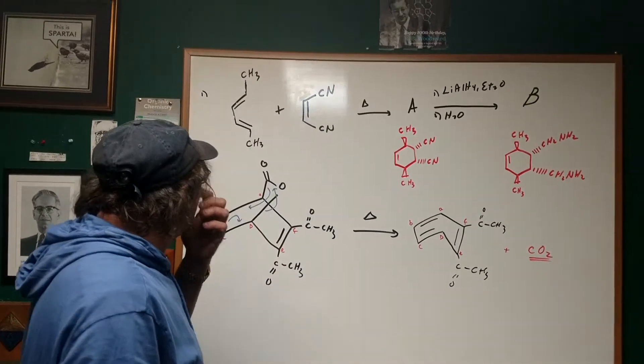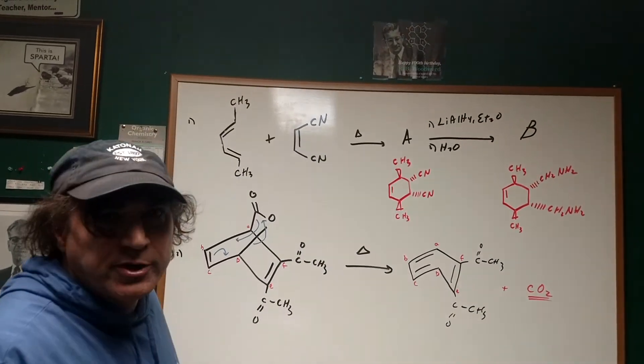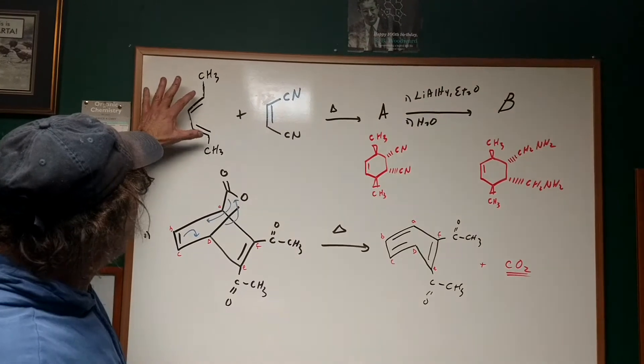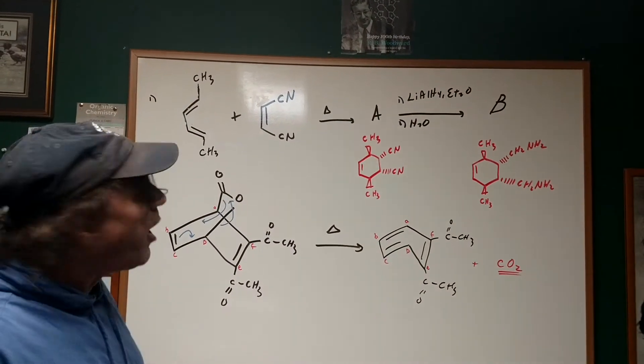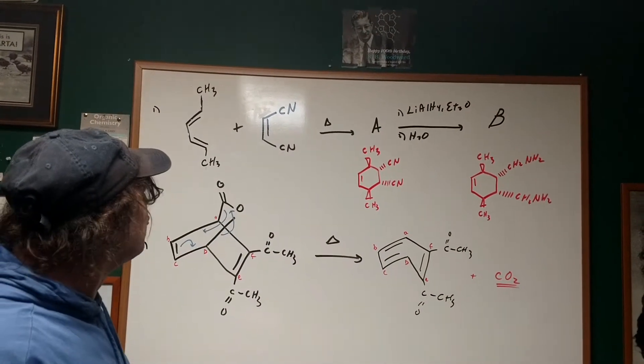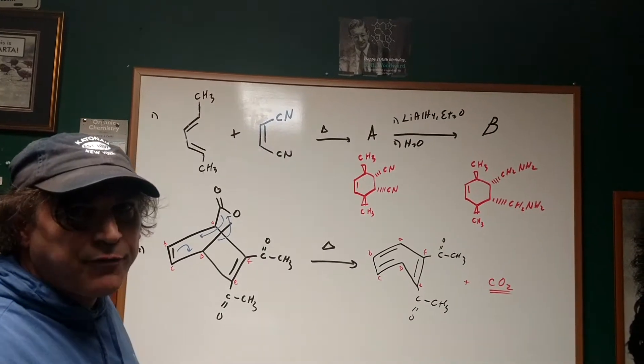If you look on the blackboard, we're going to have two components to a Diels-Alder. We have what's called a conjugated diene and the molecule reacting with the conjugated diene is called a dienophile.